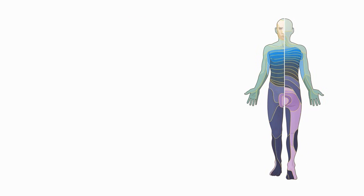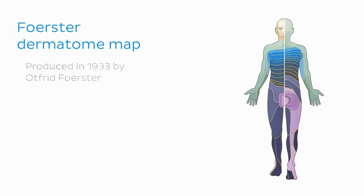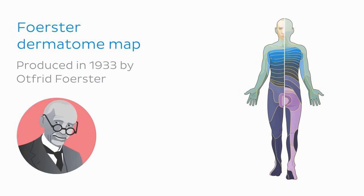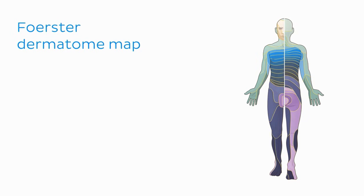The other map we're going to look at in this tutorial is known as the Forster map, which looks a little something like this. It was produced in 1933 by Ottfried Forster, and is the next most widespread in major anatomical textbooks. It shows a more segmental distribution of dermatomes, especially on the limbs, but we'll talk more about this shortly.